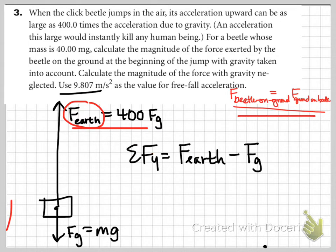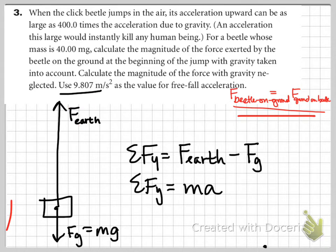So I have sum of forces on the Y is equal to the force of the Earth minus the force of gravity. Now I'm going to apologize, I had mislabeled something earlier. I said that the force of the Earth up on the bug was 400 times the force of gravity. That's not what we were told.